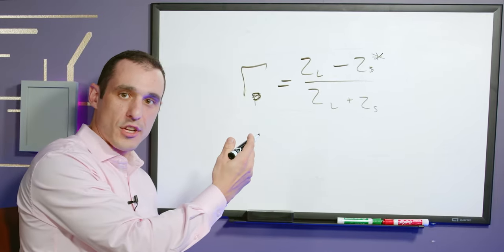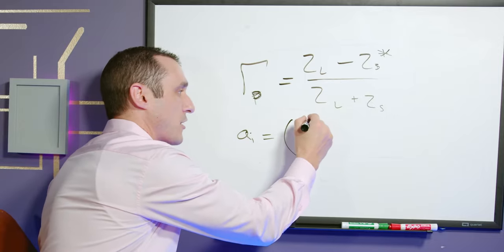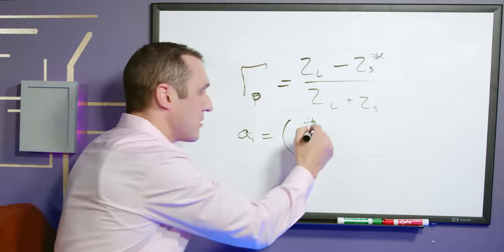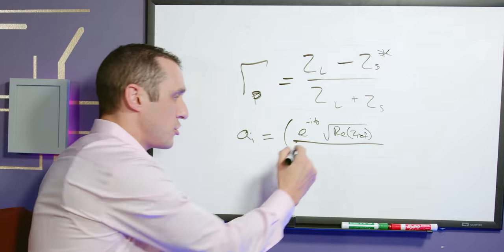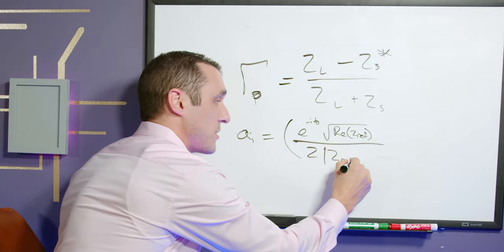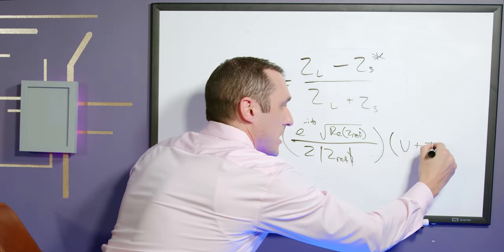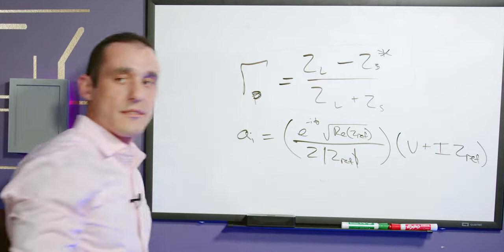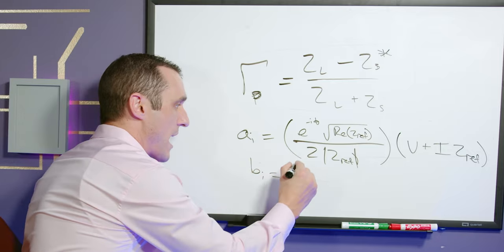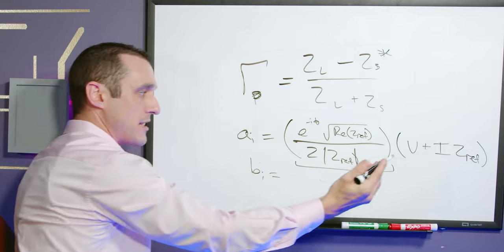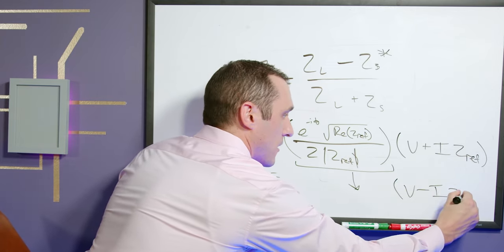In terms of the S-parameters and input and output powers from a two-port network, we have an alternative definition of a and b. a sub i is going to equal a phase factor multiplied by square root of the real part of the reference impedance divided by 2 times the magnitude of the reference impedance, and then we have another term which is the voltage plus i times the reference impedance. This is our a value. For the b value we have something really similar with the same fraction multiplied by v minus i zref.